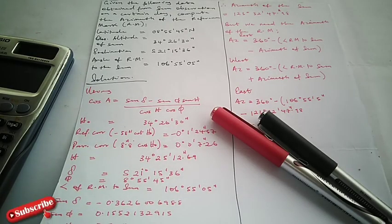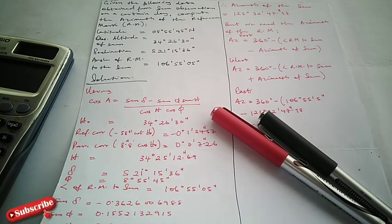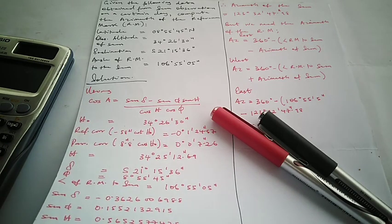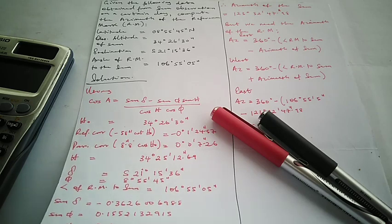Hello guys, welcome to Surveying Solutions, your number one channel where you get solutions to all your surveying problems. Today we are going to talk about field astronomy and how we are going to calculate the azimuth of a celestial body — and emphatically, the azimuth of the sun. It's going to be an awesome ride.